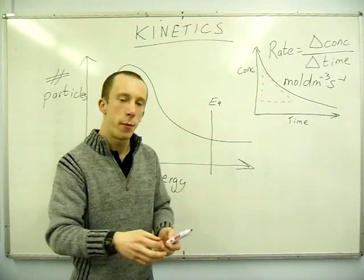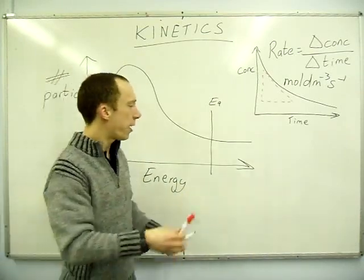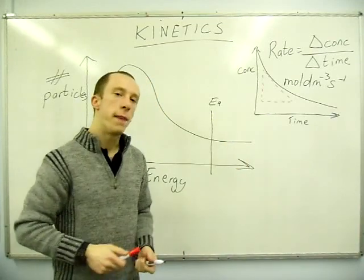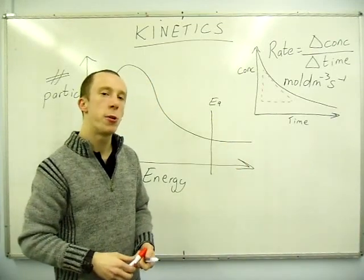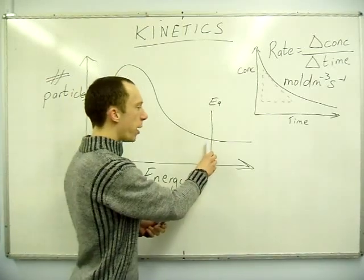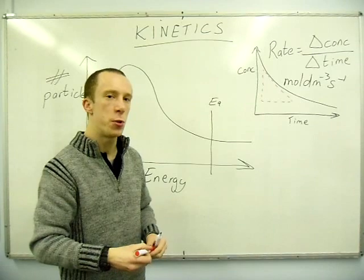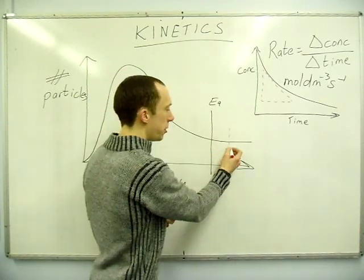So back to how we show this on a Maxwell Boltzmann distribution. As we said here, the area under that part of the line there represents the total amount of particles which are reactive. So do I move this barrier to the right? Think about what that would do to the area. If I moved it to the right here, the area would decrease. Does that sound logical?